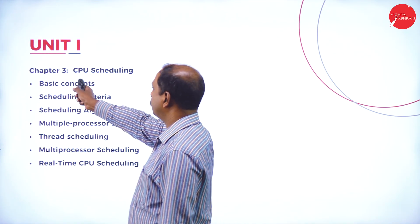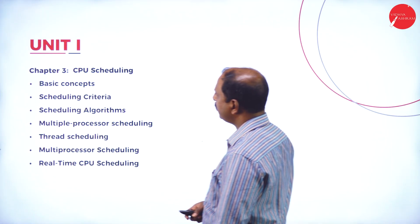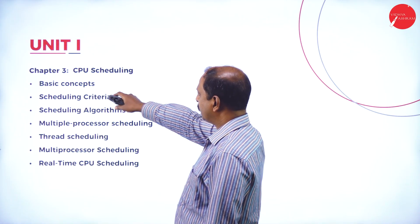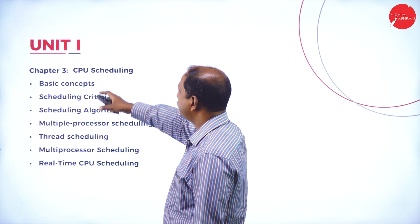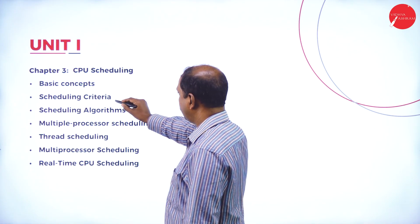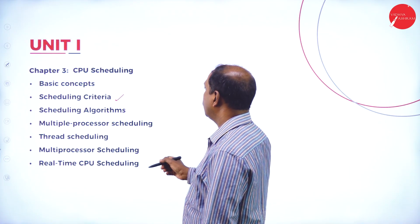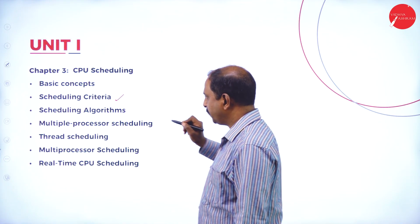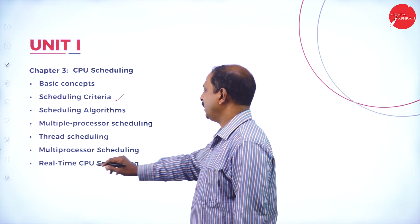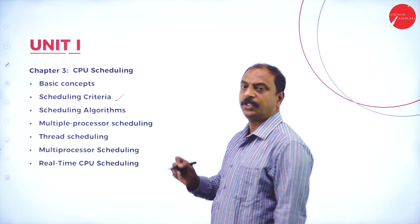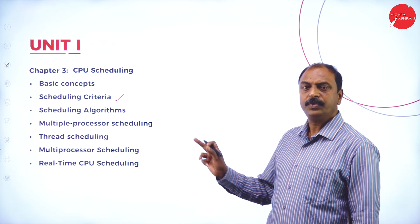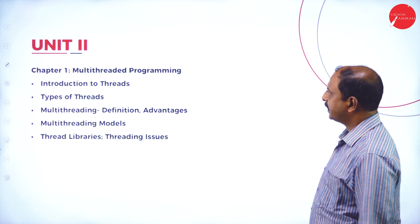Chapter 3 under Unit 1 is CPU scheduling. Under that we will learn the basic concepts of scheduling, scheduling criteria, scheduling algorithms, multi-processor scheduling, thread scheduling, and real-time CPU scheduling. This completes the three chapters of Unit 1.